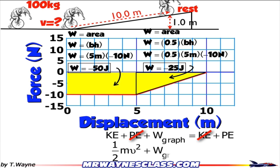Next step, plug in my equations. 1 half mv squared plus work of the graph equals mgh.